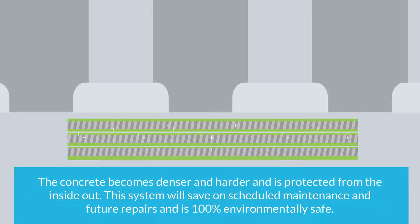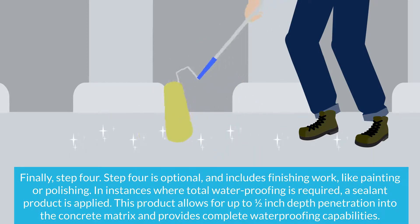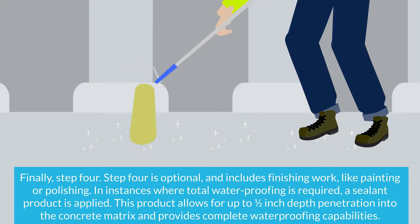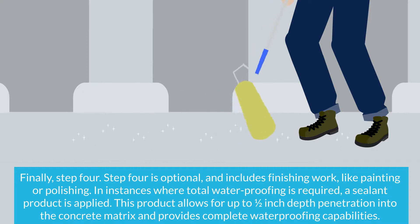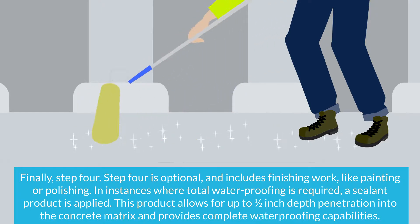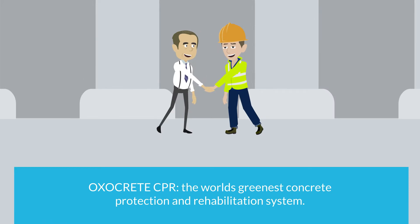This makes the concrete permanently resistant to both water, air, and most harmful contaminants. The concrete becomes denser and harder and is protected from the inside out. This system will save on scheduled maintenance and future repairs and is 100% environmentally safe. Finally, step four is optional and includes finishing work like painting or polishing. In instances where total waterproofing is required, a sealant product is applied, allowing up to a half-inch depth penetration into the concrete matrix and providing complete waterproofing capabilities. Oxycrete CPR — the world's greenest concrete protection and rehabilitation system.